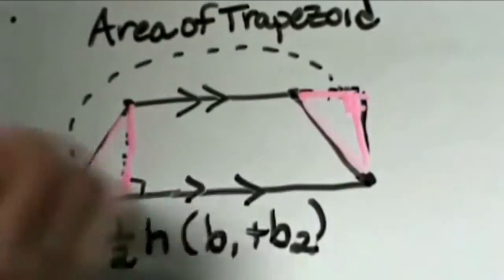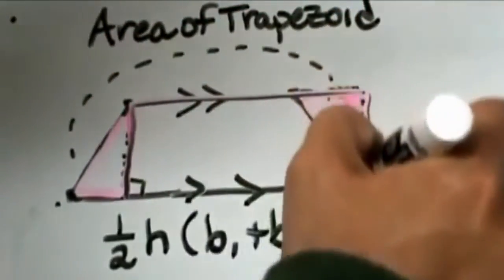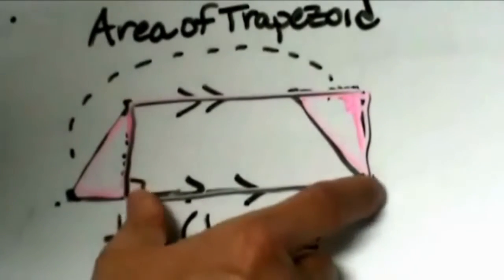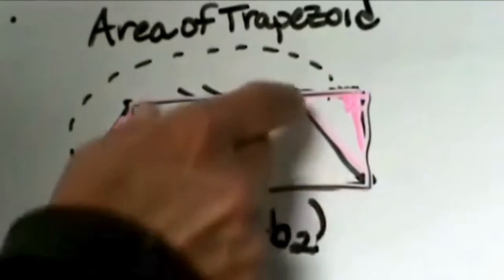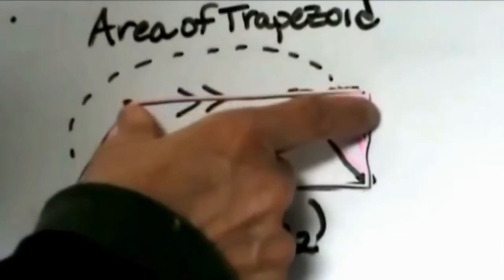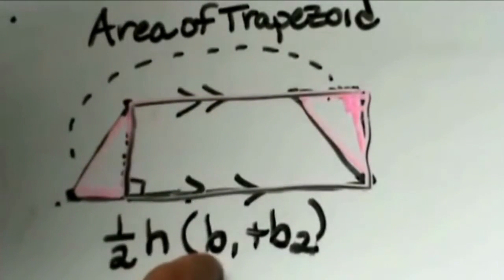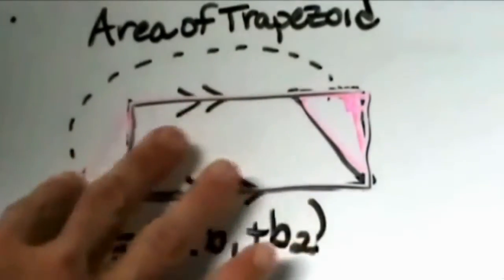So now we're working with this new rectangle. We've taken our trapezoid and redrawn it as a rectangle. Notice this base is not the same length as the original base and this top base is not the same length as the original base. It's actually the average of the two bases put together. So I'm going to erase this since we've rotated it around.